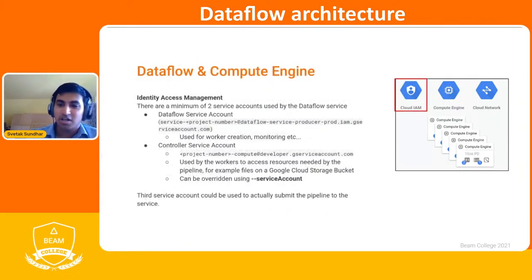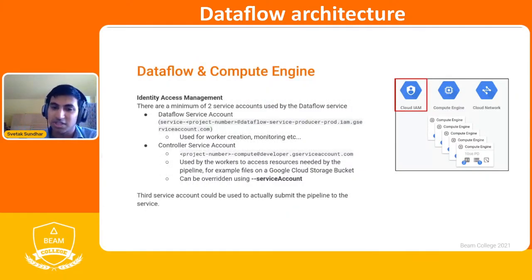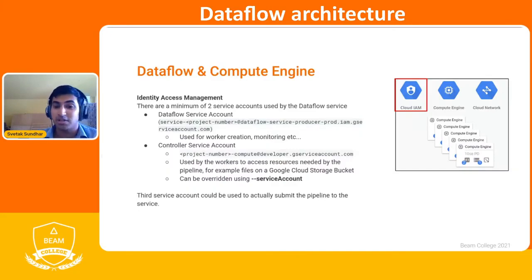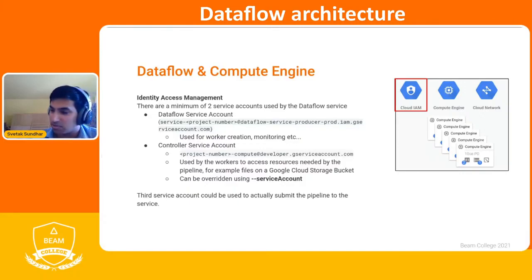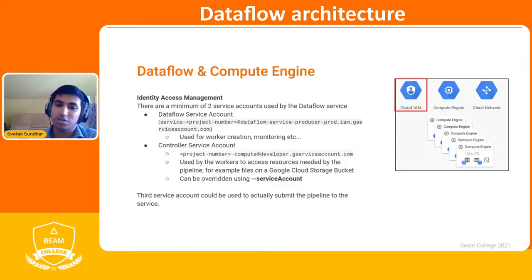With Dataflow and Cloud IAM, there are a minimum of two service accounts that need to be provisioned to successfully execute a job — mapping to the primary worker and secondary workers respectively. The Dataflow service account maps to your primary worker and is used for worker creation, monitoring, etc. The controller service account maps to the secondary workers carrying out the work, and provisions access to resources your pipeline needs, such as files from the GCS bucket.